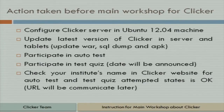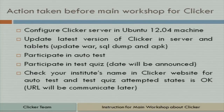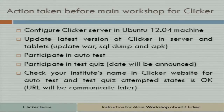The main thing is that you have to configure the clicker on an Ubuntu server. You have to install the Ubuntu machine — the preferable version is 12.04, which is the latest LTS. On that machine, you have to install the clicker software. The clicker software is available on our IADB server, and the link has already been provided to everyone. Everything will be distributed before the workshop starts.